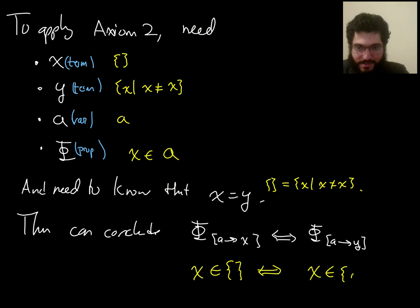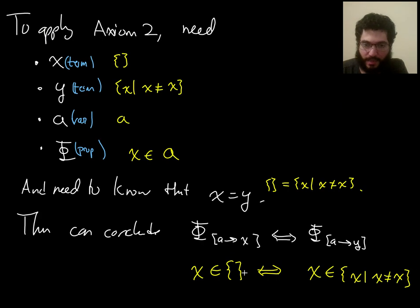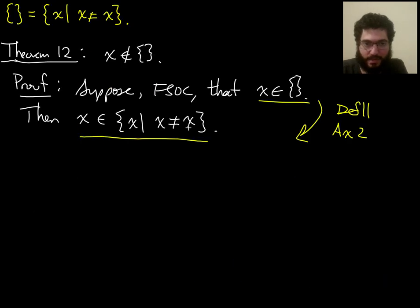All right, so axiom 2 gives me this. And then in the situation that I was in, I knew that x is in the empty set. So I knew this thing, right? And axiom 2 gave me this equivalence. So from knowing this, I can deduce this. And that is what appears in the second line here.